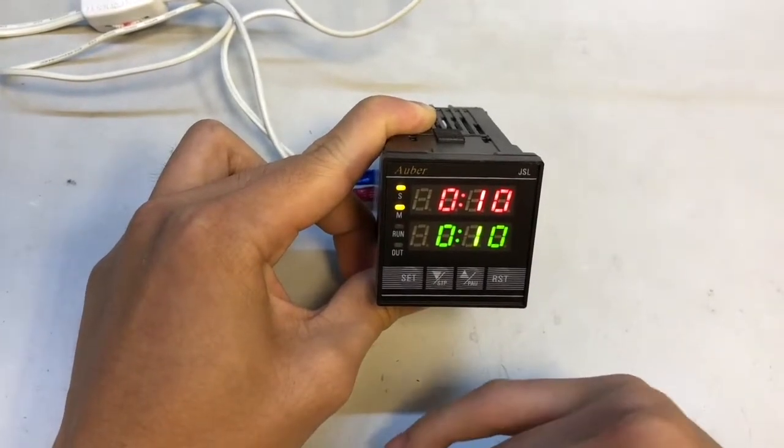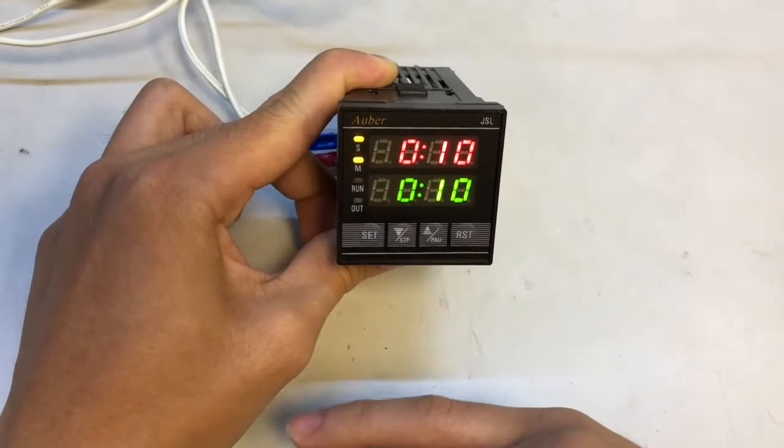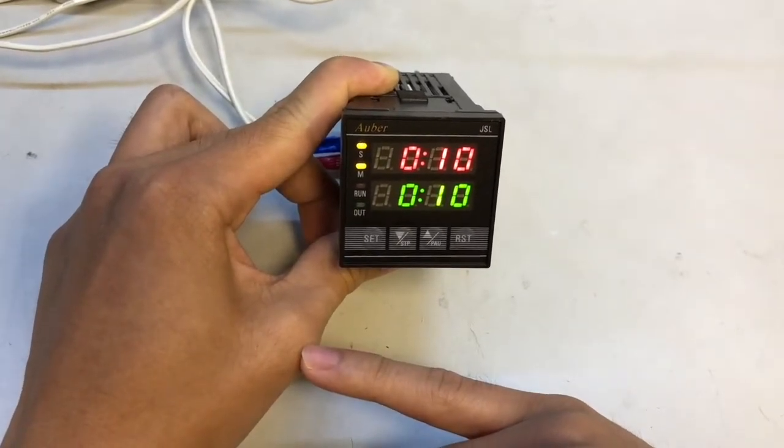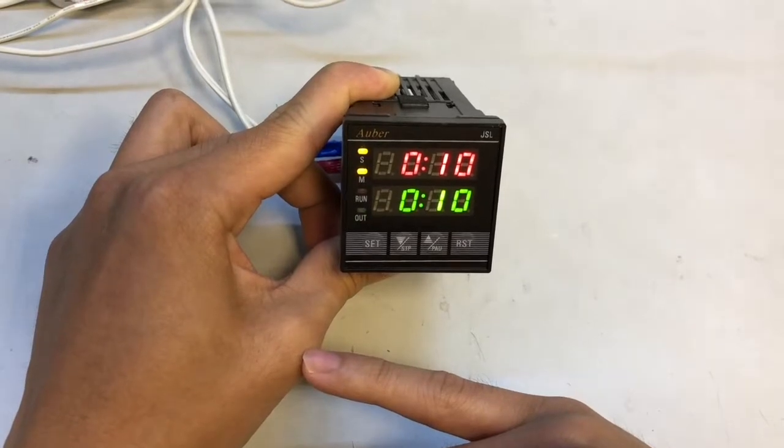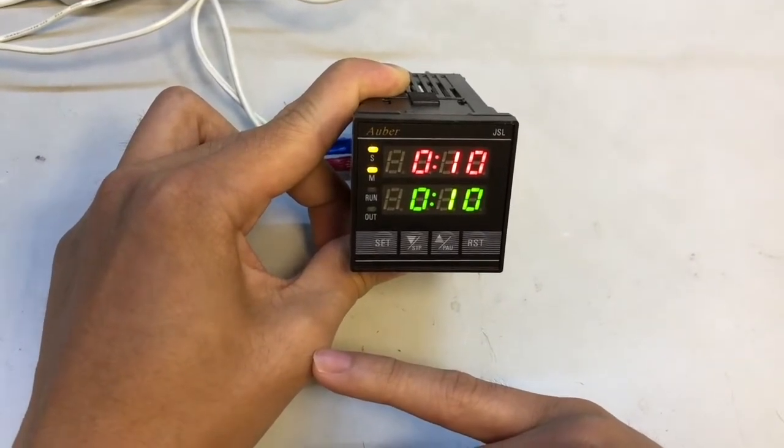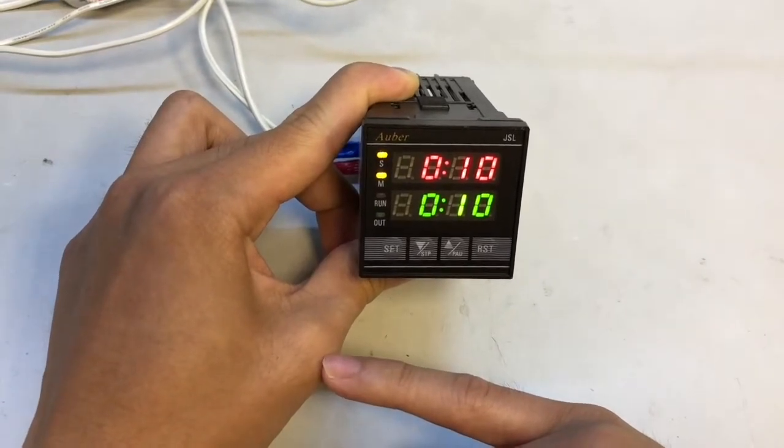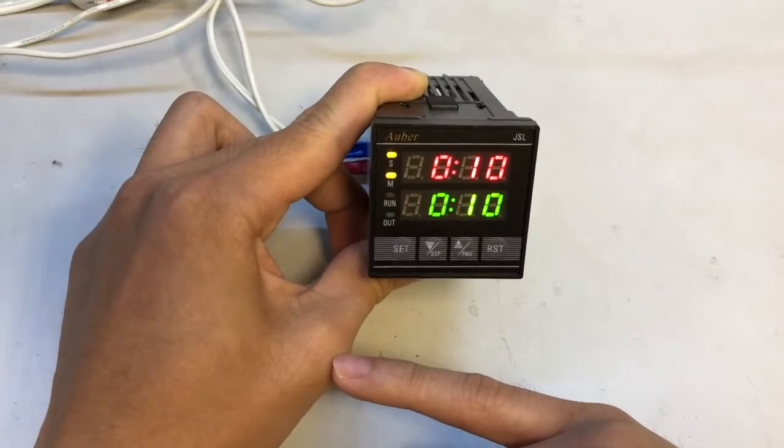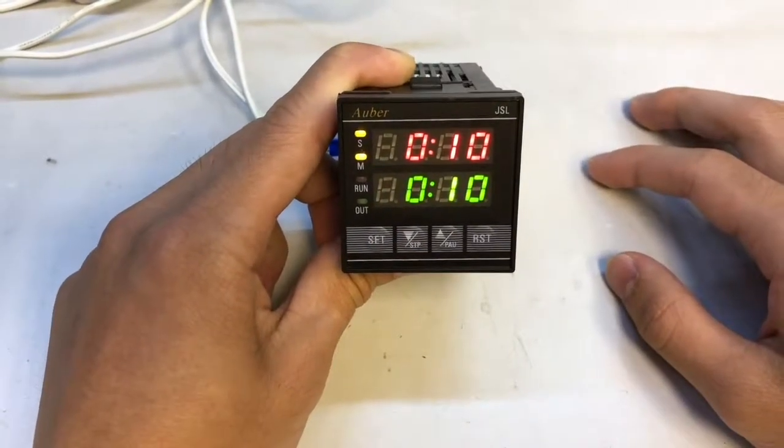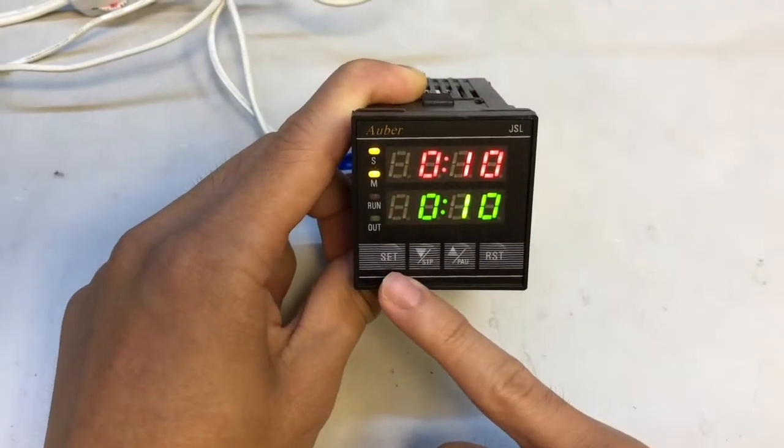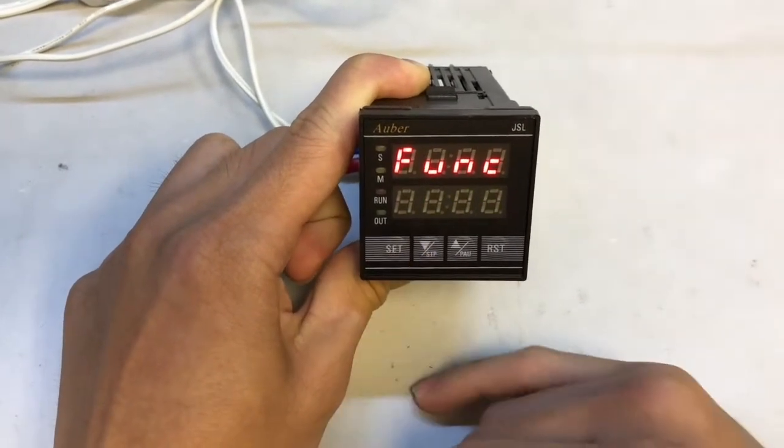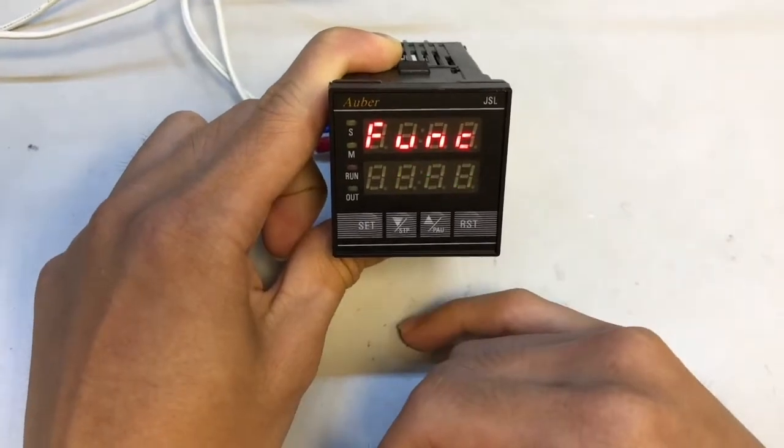Notice the timer is only setting in seconds, which is not really suitable for setting times in hours or minutes. We can actually change the units in programming mode along with a range of other parameters for your specific needs like timer mode, temperature units, or whether the timer counts up or counts down. To enter programming mode just press and hold the set button for three seconds.